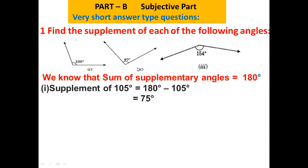Similarly, to find the supplement of 87 degrees, I will subtract it from 180 degrees and my answer is 93 degrees.